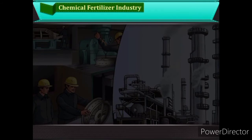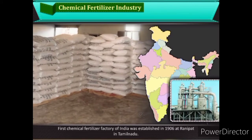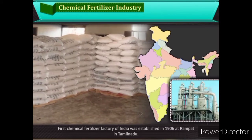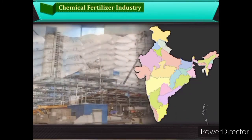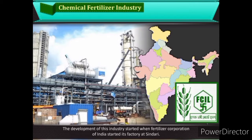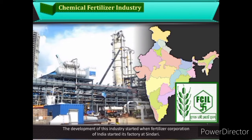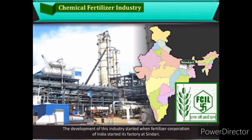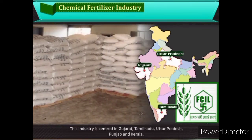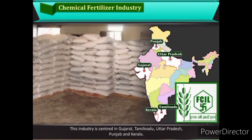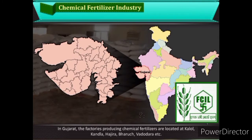Chemical Fertiliser Industry: The first chemical fertiliser factory of India was established in 1906 at Ranipet in Tamil Nadu. The development of this industry started when the Fertiliser Corporation of India started its factory at Sindri. This industry is centred in Gujarat, Tamil Nadu, Uttar Pradesh, Punjab, and Kerala. In Gujarat, factories producing chemical fertilisers are located at Kalol, Kandla, Hajira, Bharuch, Vadodara, etc.